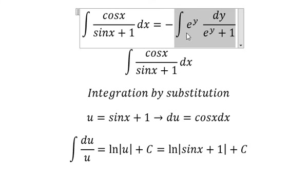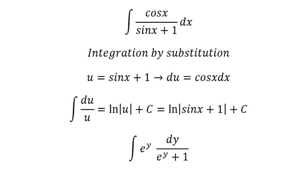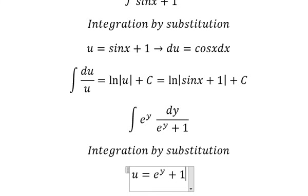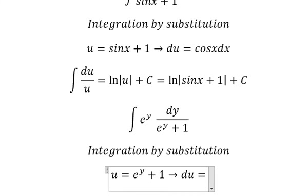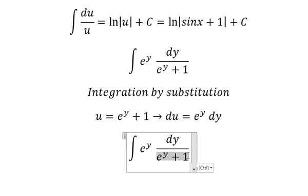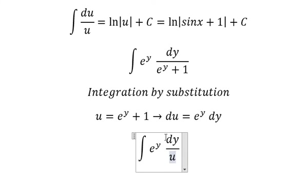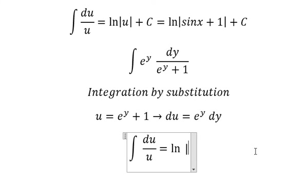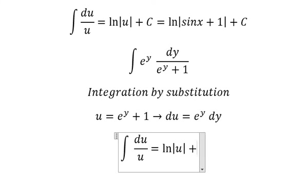Now let's go to the second one. We need to use integration by substitution. So I will put u equals to e to the power of y plus 1. Then we do the first derivative for both sides, and we have e to the power of y dy. So e to the power of y plus 1 we change by u, and e to the power of y dy will change by du. The integration of this one gives us ln of the absolute value of u, plus c.